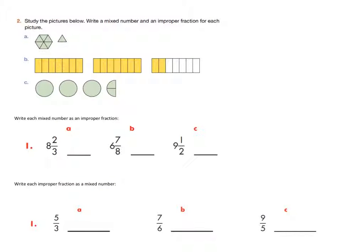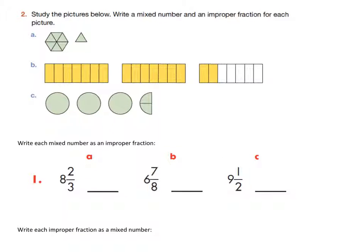Alright, now you get to do some practice with your partners. Write the mixed number and the improper fraction for each picture. Press pause and do that now. Alright, let's take a look. Starting with the mixed number — I have one complete whole, divided into sixths. So denominator is six. I have one left over, so my mixed number is one and one-sixth. For the improper fraction, six plus one more is seven — so seven-sixths.